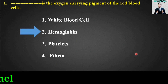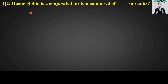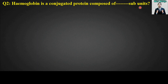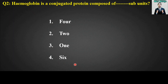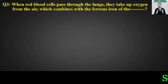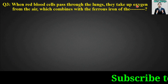MCQ number two: Hemoglobin is a conjugated protein composed of blank sub units. Options are: four, two, one, or six. The right answer is option number one — hemoglobin is a conjugated protein composed of four sub units.